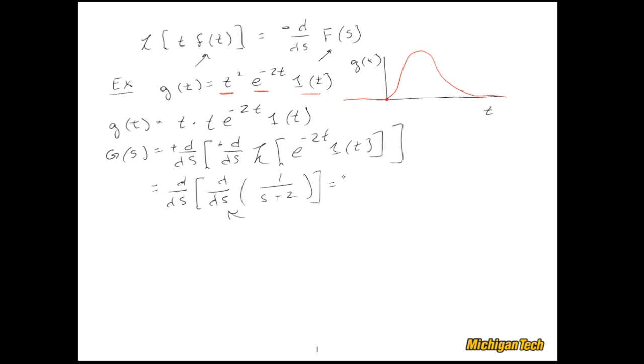So we have d/ds and I need to do the quotient rule on 1 over s plus 2. Derivative of the top with respect to s is 0 times the bottom but who cares, minus derivative of the bottom with respect to s which is 1 times the top, so I get negative 1, and then I make sure I square the denominator. So there we go. I can bring the negative sign out front.